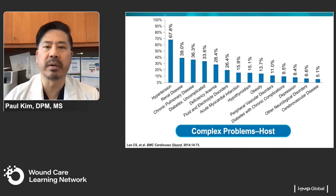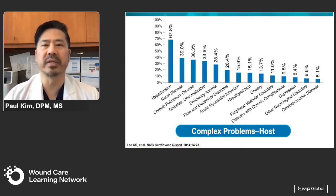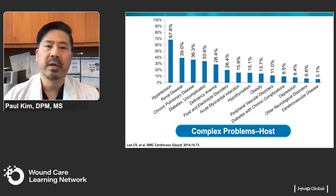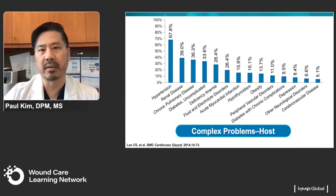Looking at comorbidities in the inpatient population, 82% of patients in the hospital right now have five or more comorbidities. These comorbidities by themselves may not be a big deal — hypertension alone can be easily managed — but if you add renal disease, pulmonary disease, diabetes, and other conditions, the patient becomes much more complex.